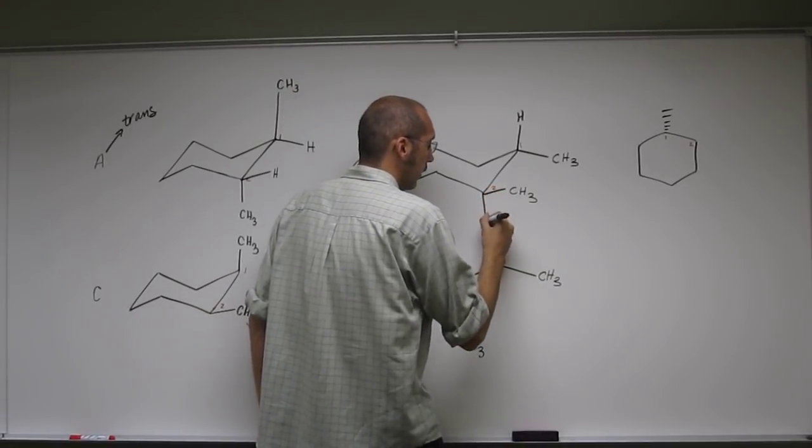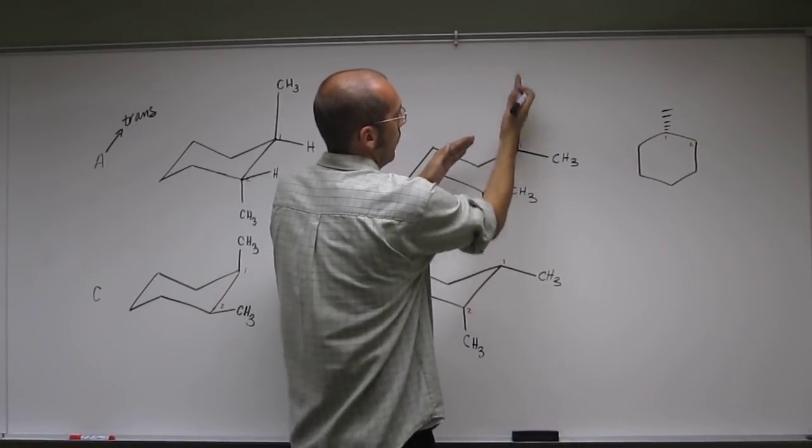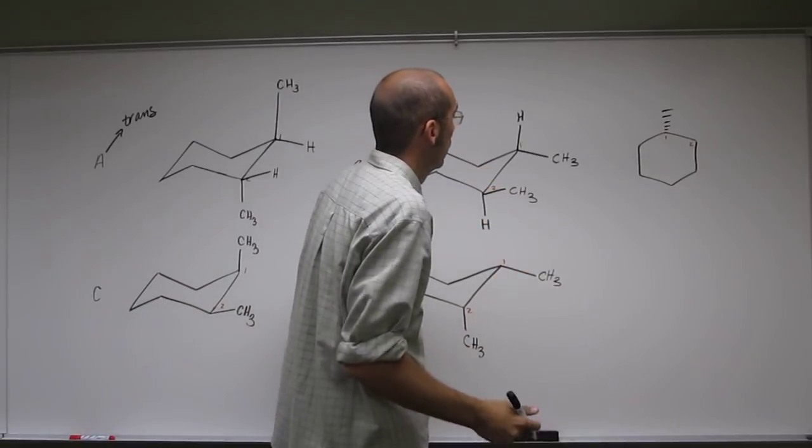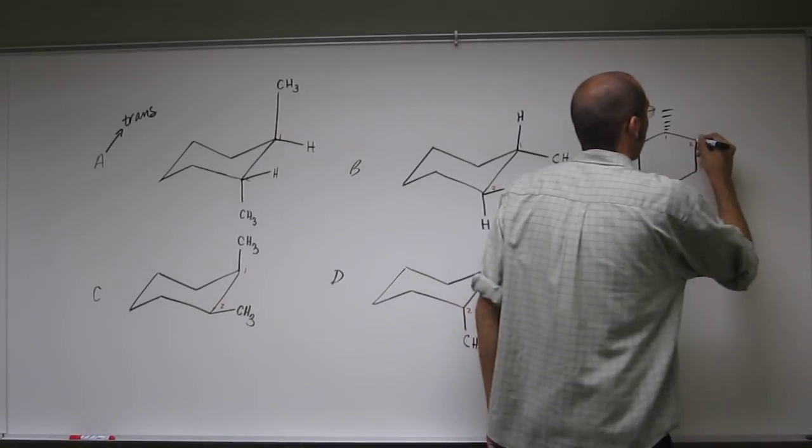And here, hydrogen is down axial. So whenever the point is up, that means the axial is up. Whenever the point is down, the axial is down. So the methyl group here, since the hydrogen is down, the methyl group has to be up.